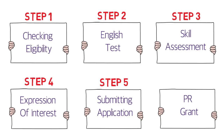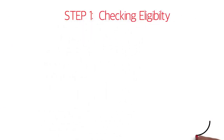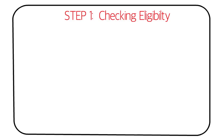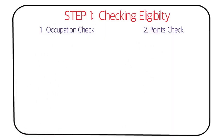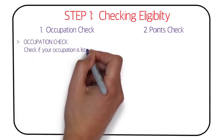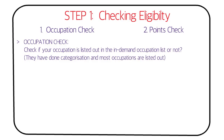Step one is the eligibility check — the first and foremost thing you should do, and it can be done online. There are two parts: the first is an occupation check, where you verify that your occupation is listed in the in-demand occupation list. Most occupations are now listed, so you shouldn't need to worry.